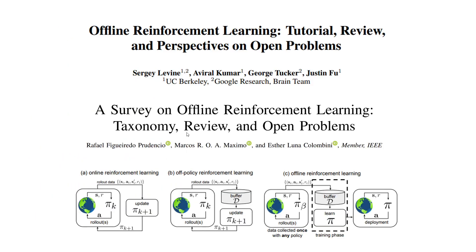Here are the two survey papers used for this presentation. Below is an image showing the difference between offline reinforcement learning and classical approaches. The most well-known approach is where an agent interacts with the environment, takes an action, gets the new state and reward, uses that data point to update the agent, and keeps interacting.